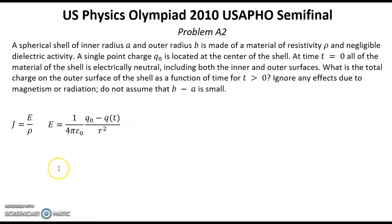And now we can rewrite that total current will be area 4π R squared multiplied by current density, which is 1 over epsilon 0 ρ multiplied by Q0 minus Q.